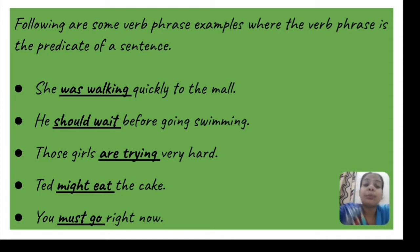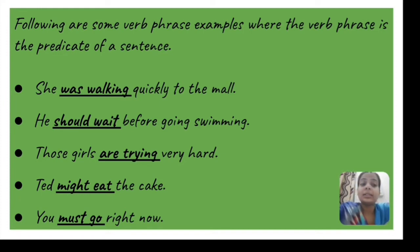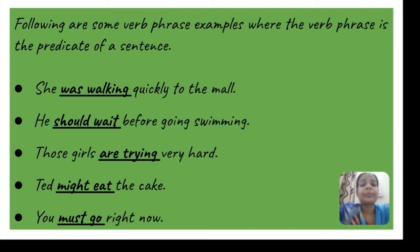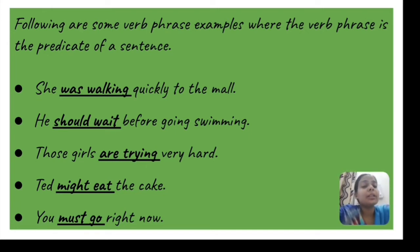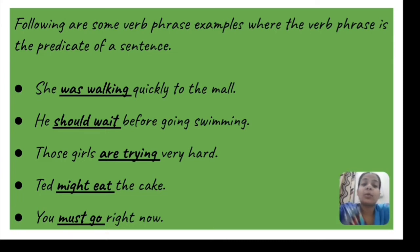In 'those girls are trying very hard,' 'are trying' is the verb phrase because 'are' is an auxiliary and 'trying' is the main verb. In 'it might eat the cake,' the modifying word 'might' makes 'might eat' the verb phrase. In 'you must go right now,' 'must' is the modifier and 'go' is the main verb — all these highlighted words are verb phrases.